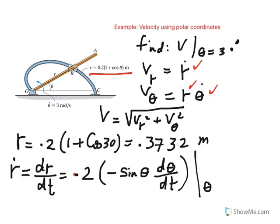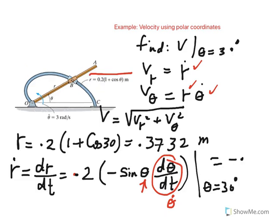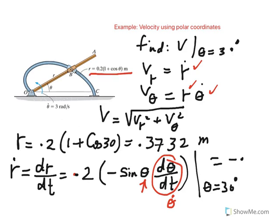Now go ahead and evaluate this at theta equals 30 degrees. Remember we have to put 30 degrees here for theta, and this one is actually theta dot, which is 3 radians per second. Once we calculate this, it comes out to be negative 0.3, and the unit should be meters per second. So we are ready to go to the next page and start calculating.